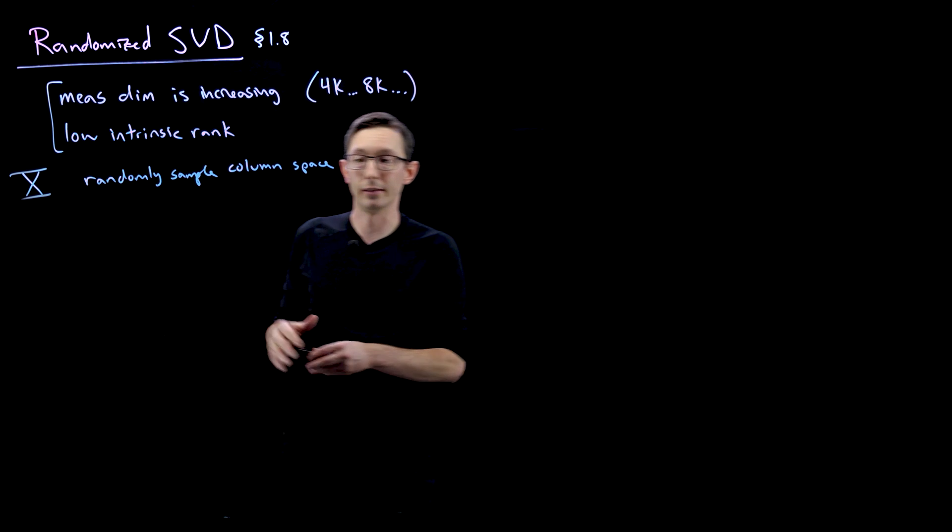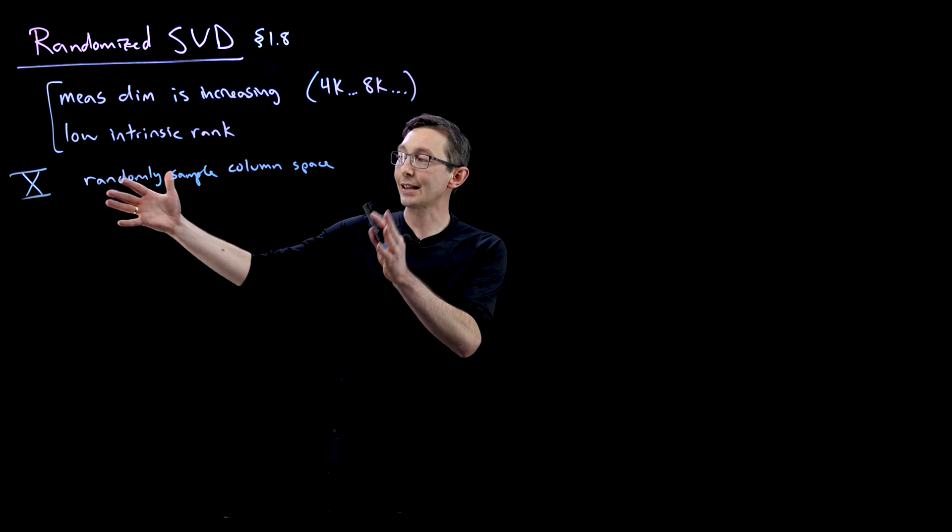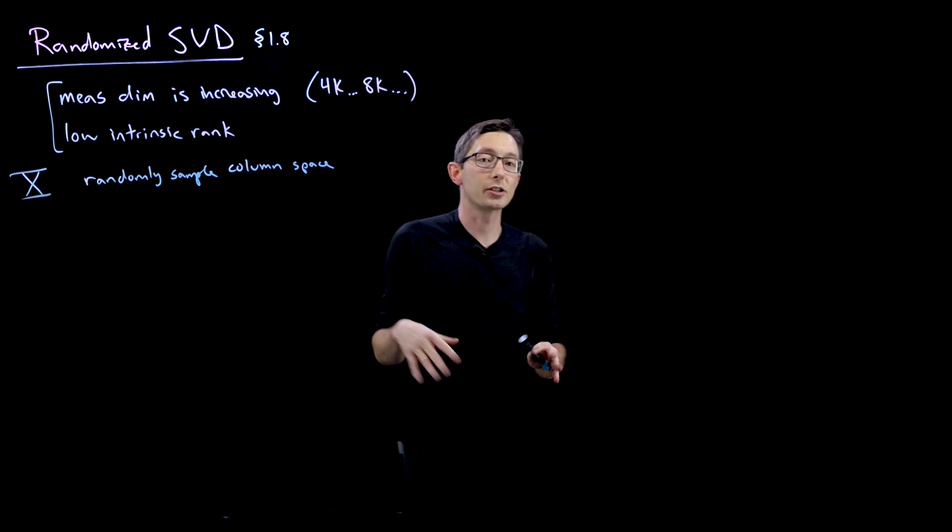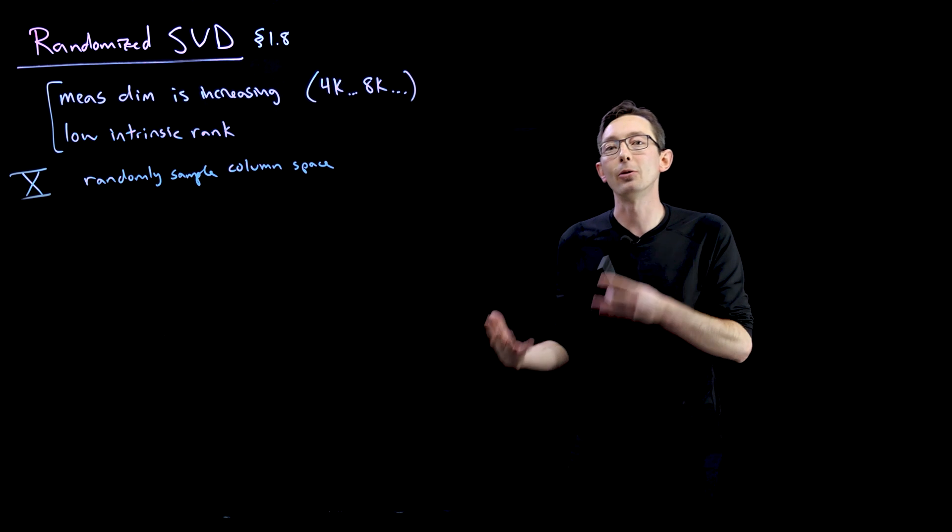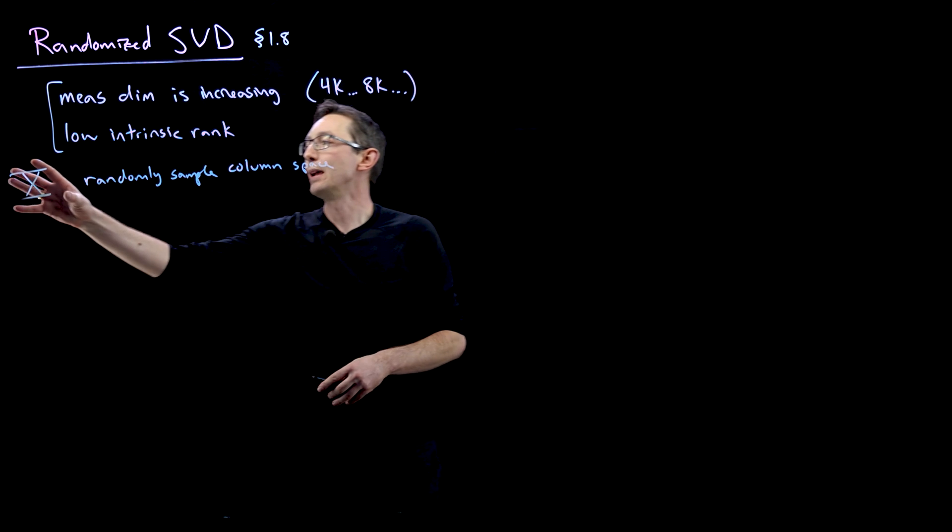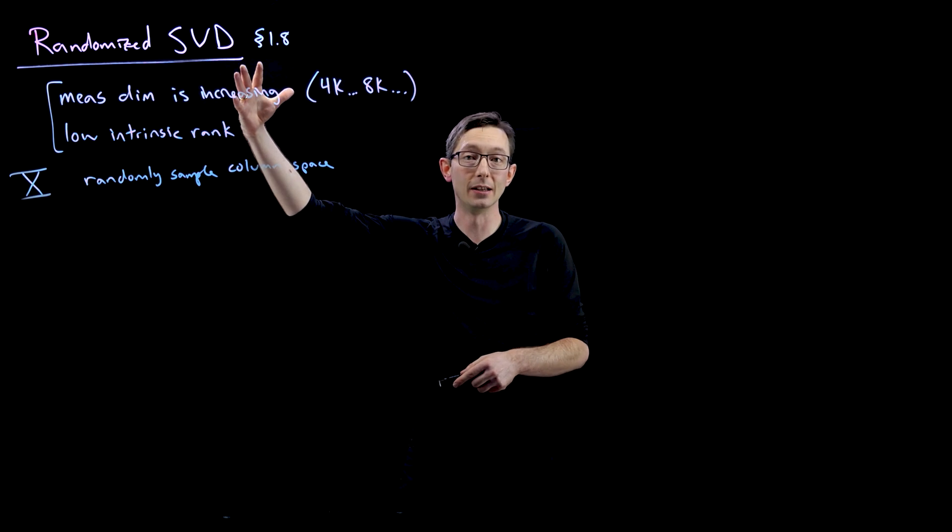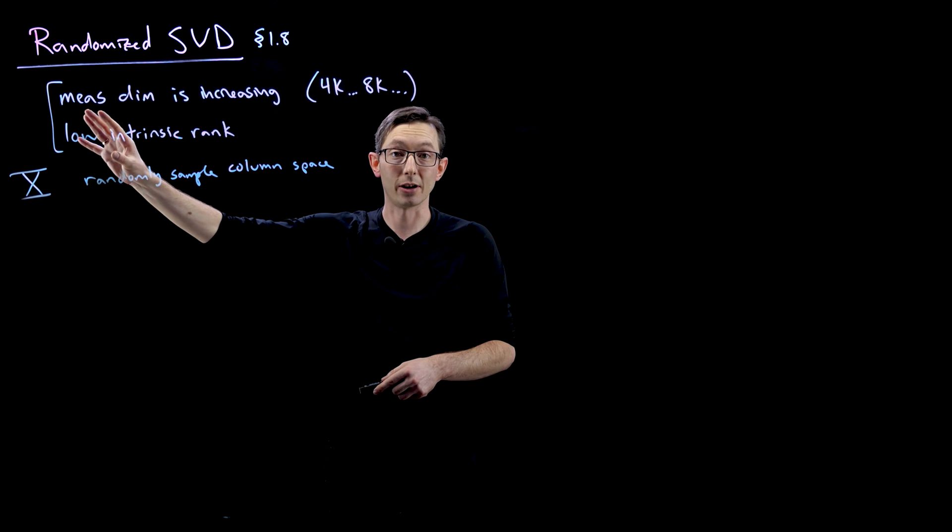This is all covered in section 1.8 of our book in Data-Driven Science and Engineering. The link is in the comments. And in the next video, we're actually going to code up this randomized SVD on examples. But here I just want to walk through the math of how we can expect to make our lives easier and compute a faster, more efficient SVD if there really is low rank structure.